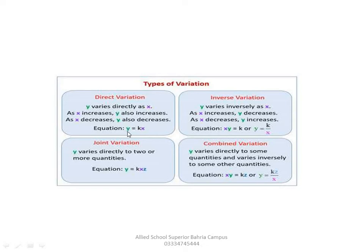This is the equation for direct variation: Y = KX, where K is the proportional constant. The value of K is sometimes not given, but it can also be given if the question contains relevant data. Otherwise, this is the standard equation for direct variation.